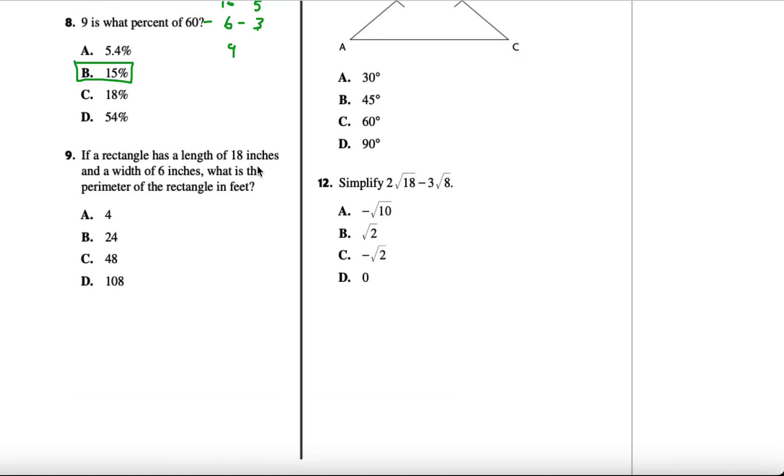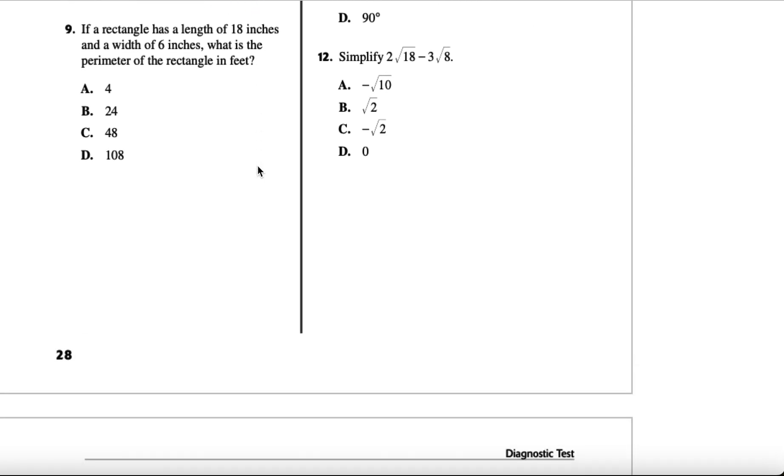Number 9: if a rectangle has a length of 18 inches and a width of 6 inches, what is the perimeter of the rectangle in feet? If you draw this out, we have 18 and 6. When you add all this together, you get 48 inches. But they want the answer in feet. We know 12 inches gives us 1 foot, so we divide 48 by 12 and get 4 feet. The answer is A.